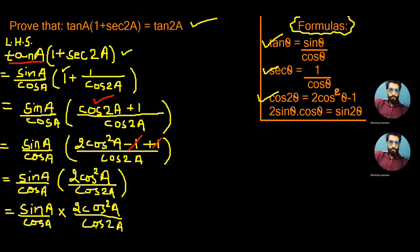Let's cancel this cos A and single cos A from 2 cos² A which will be now sin A into 2 cos A whole divided by cos 2A.